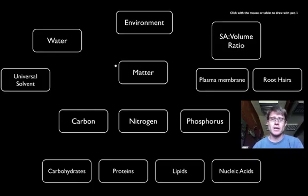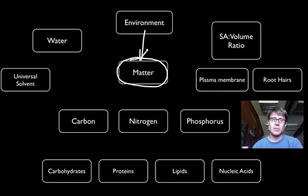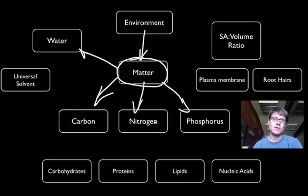And so how we exchange that matter is super important. To summarize what I'm going to talk about is how we utilize matter, how we get matter from our environment. The big four types of matter I'm going to talk about are water, carbon, nitrogen, and phosphorus, and how we acquire those things.